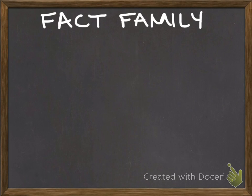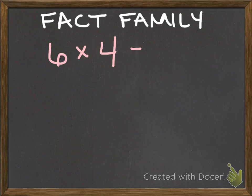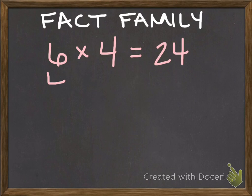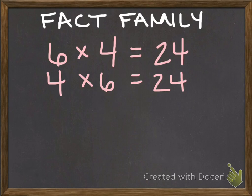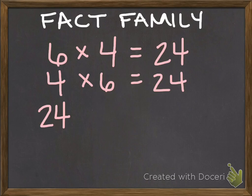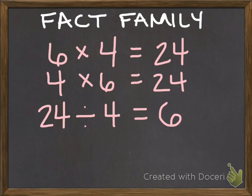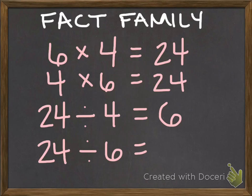Last but not least, don't ever forget your fact families — they really help you solve problems. Six times four, we now know, is twenty-four. Because of the commutative property, we know that four times six is also twenty-four. But don't forget our division friends — that is our inverse operation. In division, the total comes first, so twenty-four would be first. I can divide that by her four friends, and we know that she gave each friend six candies. I can also say that twenty-four divided by six equals four. These are the facts in this fact family for multiplication and division.